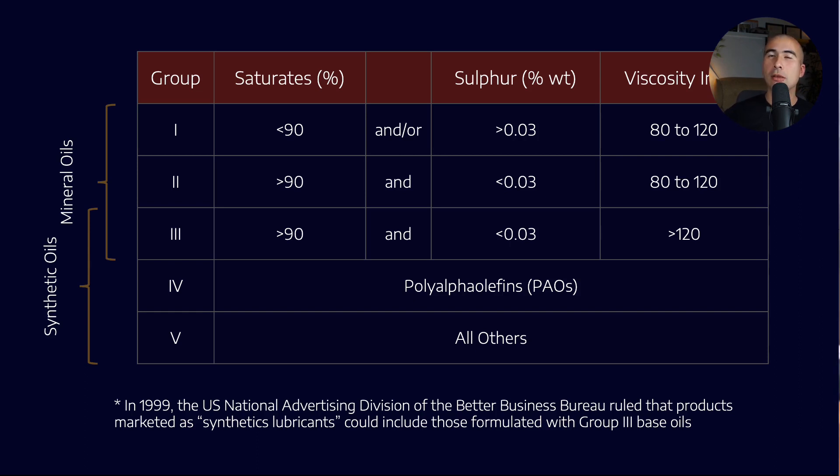Group 4 is the polyalpha olefins and group 5 is a catch-all group for everything that is not in the first four. So that comprises vegetable oils, silicones, naphthenic base oils as well as alkylated naphthalenes, esters, polyalkylene glycols, basically anything that you can dream up.